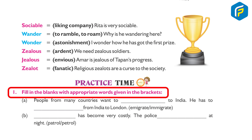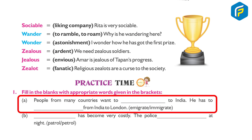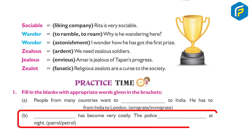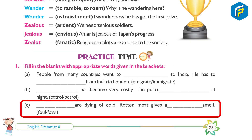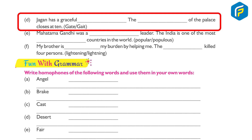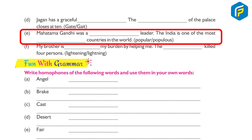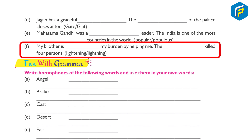Practice time — fill in the blanks with appropriate words: (a) People from many countries want to emigrate to India; he has to immigrate from India to London. (b) Petrol has become very costly; the police patrol at night. (c) Fallen and dying cold rotten meat gives a foul smell. (d) Jagan has a graceful gait; the gate of the palace closes at 10. (e) Mahatma Gandhi was a popular leader; India is one of the most populous countries in the world. (f) My brother is lightening my burden by helping me; the lightning killed four persons.